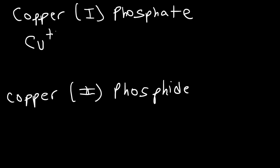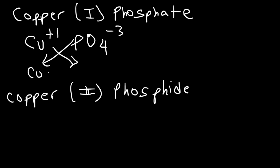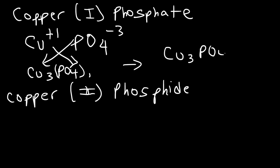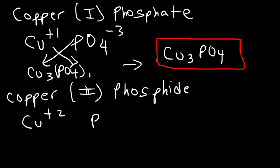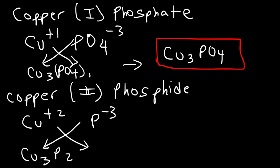In the first example, copper has a plus one charge. Phosphate is PO4 with a negative three charge, so this gives Cu3(PO4)1. Since the subscript is just one, we don't need to write the one or the parentheses, so the answer is simply Cu3PO4 — that's copper(I) phosphate. For the next one, copper has a plus two charge and phosphate has a minus three charge, so this is going to be Cu3(PO4)2.